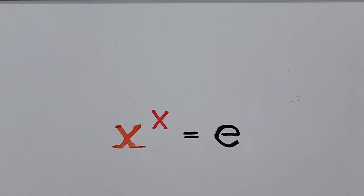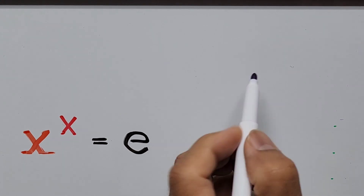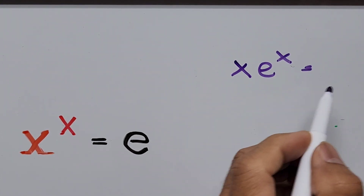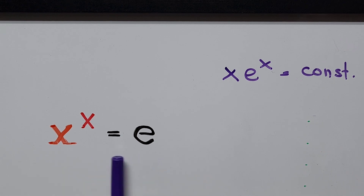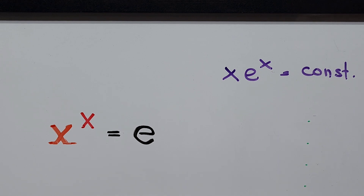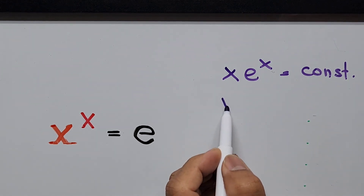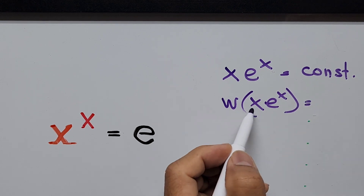In using the Lambert W function, we should have an equation represented in both an exponential form and a linear form. Specifically, we need the equation in the form of x times e to the power of x equals a constant. In our equation, x to the power of x is our variable expression and the right-hand side is the constant e.